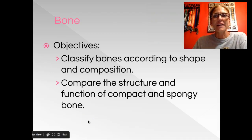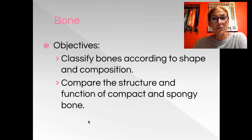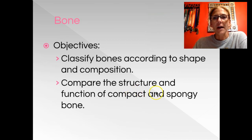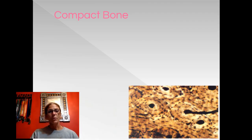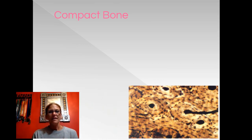Today we want to cover two things concerning bone. We want to talk about bone tissue — there are two different types of bone tissue — and we'll talk about the composition and microscopic anatomy of those. We also want to talk about whole bones; there are four categories of bones, so we want to be able to classify bones into one of those four categories. Bone tissue is different than bones themselves — bone tissue is the actual material that makes up your bones, and there are two types: compact and spongy.